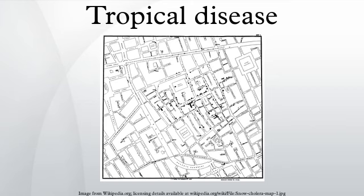Tropical diseases are diseases that are prevalent and unique to tropical and subtropical regions. The diseases are less prevalent in temperate climates, due in part to the occurrence of a cold season, which controls the insect population by forcing hibernation.